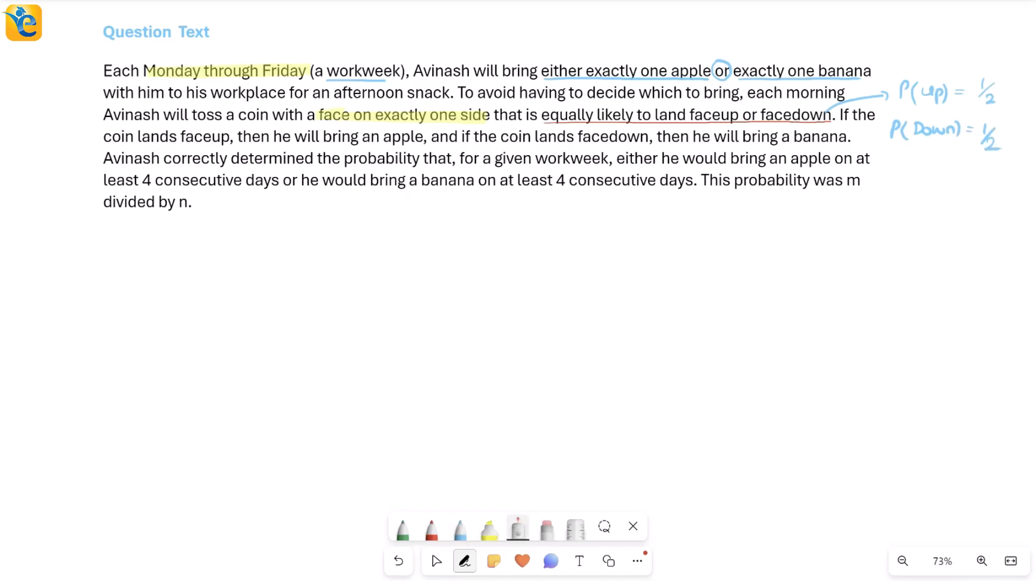If there are two outcomes only, I can say that both of them have a probability of one by two. Now let's read further: if the coin lands face up, then he will bring an apple. So this is a connection between which fruit and how the coin behaves. And if the coin lands face down, then he will bring a banana.